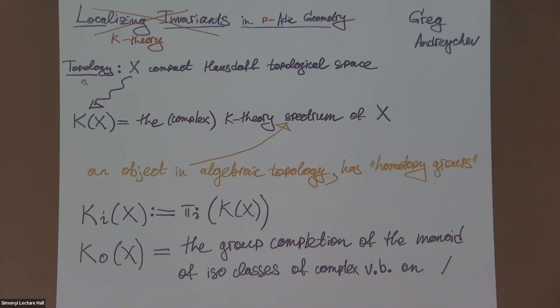You take X and then you produce a spectrum, and then you compute its homotopy groups. A spectrum is a certain object in algebraic topology, and in particular it has homotopy groups. You can define K_i groups of X to be the homotopy groups of this K-theory spectrum. And K_0 in this context is just the group completion of the monoid of isomorphism classes of complex vector bundles on X.